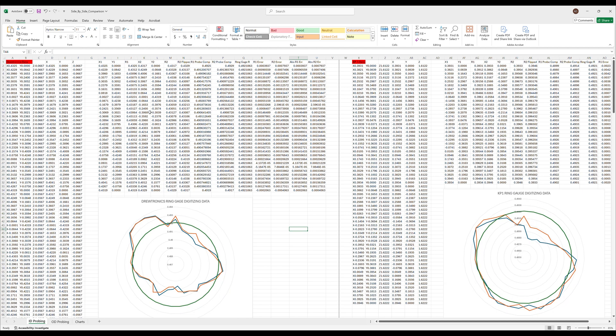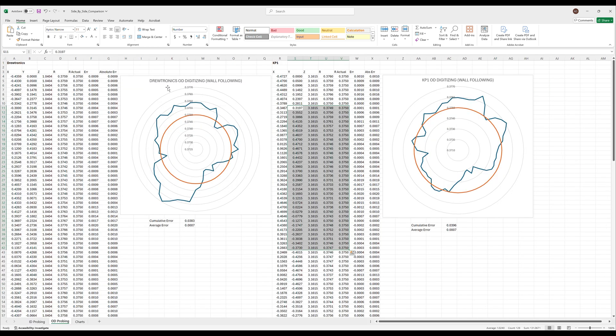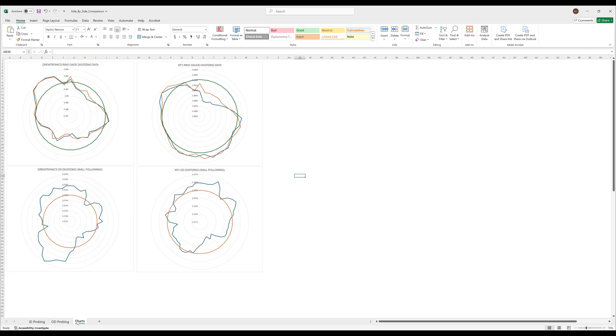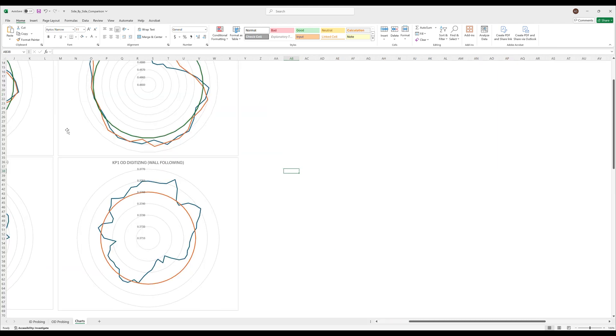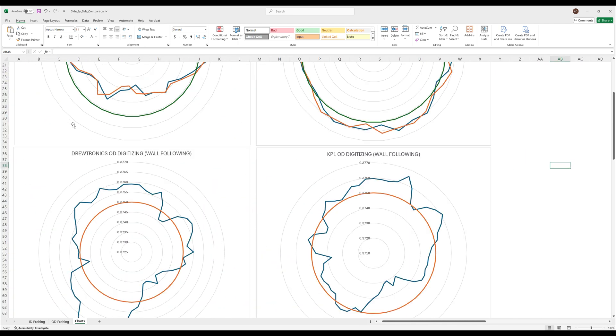So let's take a look at some of that data that we generated in the reports. This is basically the data that was generated in the reports here for the Drutronics here for the KP1 and we've just done a little bit of number crunching here to generate these plots. These are the ring gauge plots we also have some spreadsheets for the OD digitizing which is the shank of that three quarter end mill. Again we have Drutronics KP1 and here are the charts just kind of on the charts tab just summarized.